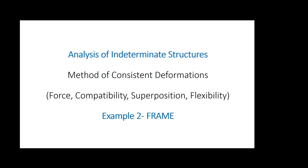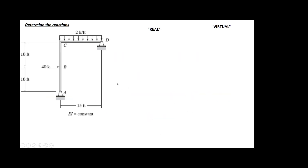This is the third video of this series. I'm going to use the method of forces or consistent deformations and show an example in a frame. The problem is asking you to find the reactions and then plot the shear and moment diagrams. First, you have to realize the structure is statically indeterminate with one degree of indeterminacy, so one redundant needs to be eliminated. I decided to eliminate dx for this particular problem.